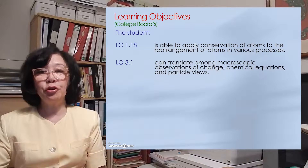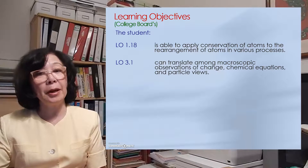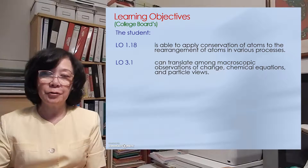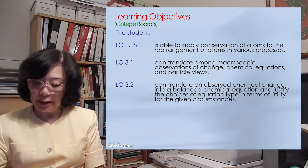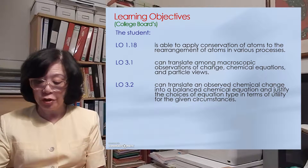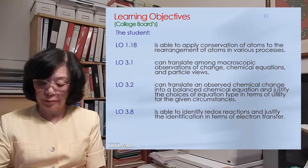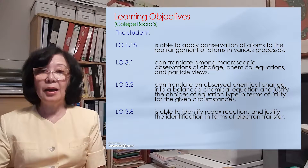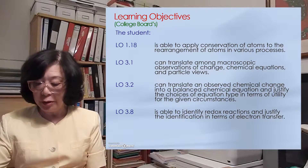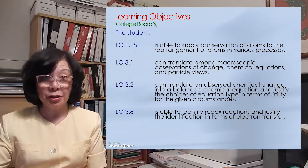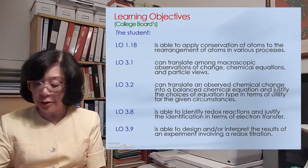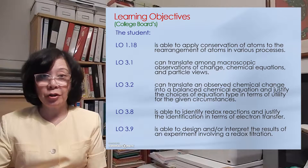The student can translate among microscopic observations of change, chemical equations, and particle views. The student can write a balanced equation based on observations of chemical change, and be able to identify it as a redox reaction by knowing that there is electron transfer. And finally, design an experiment involving a redox titration.